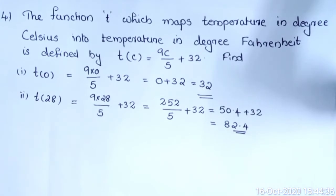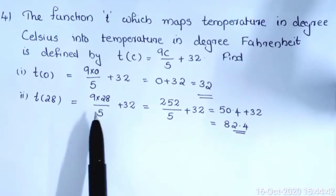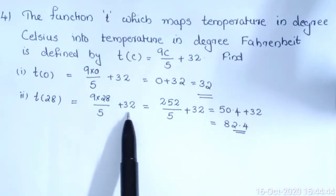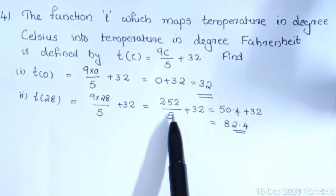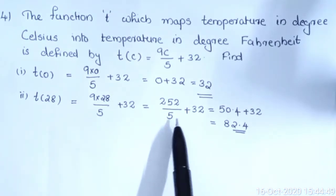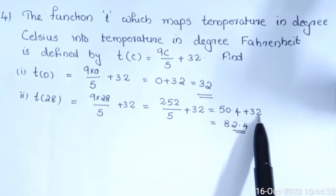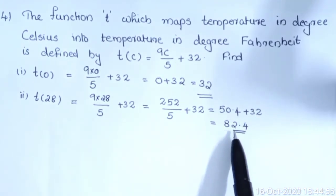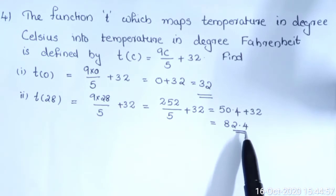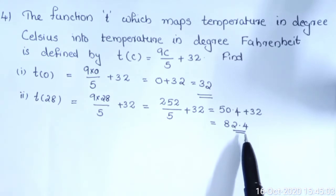Second: find T(28). T(28) = 9×28/5 + 32 = 252/5 + 32 = 50.4 + 32 = 82.4. So T(28) = 82.4.